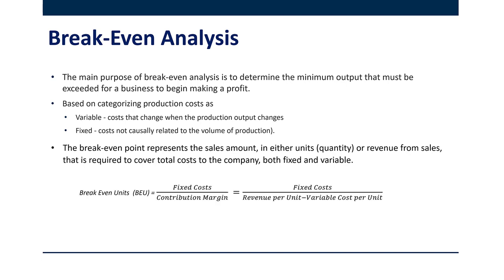The formula is really pretty simple. Breakeven units is just the total fixed cost divided by the contribution margin, and the contribution margin is just the revenue from each unit minus the cost of each unit. It's that margin left over that contributes toward paying off the fixed cost.